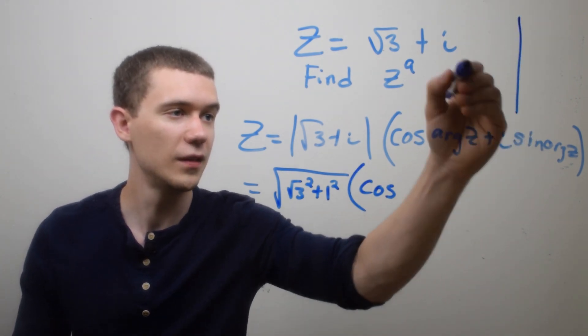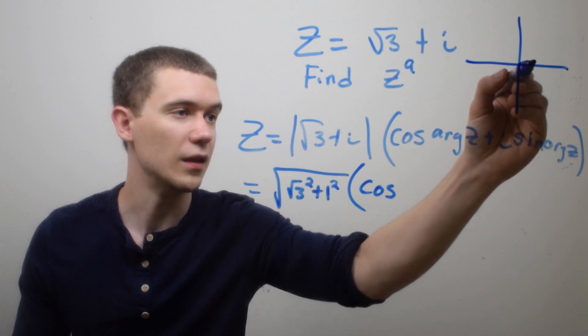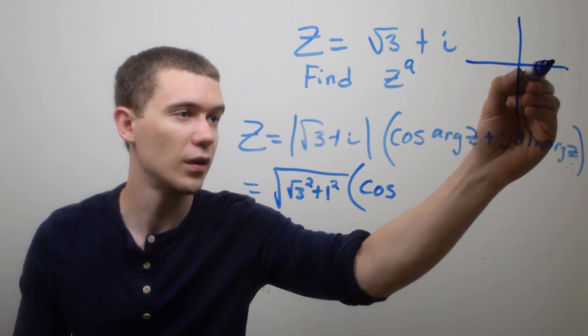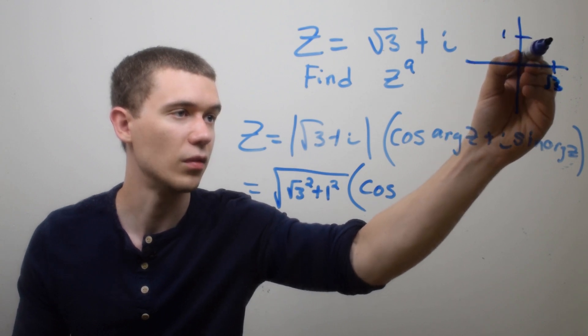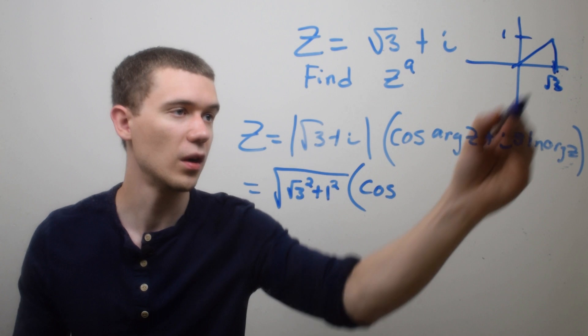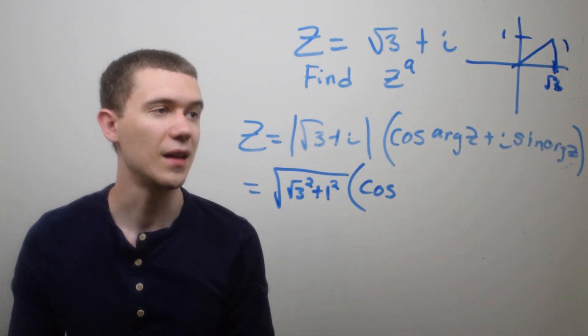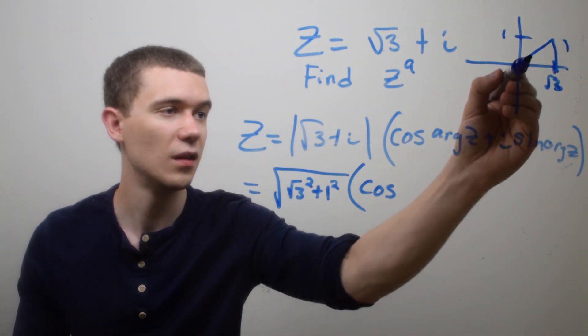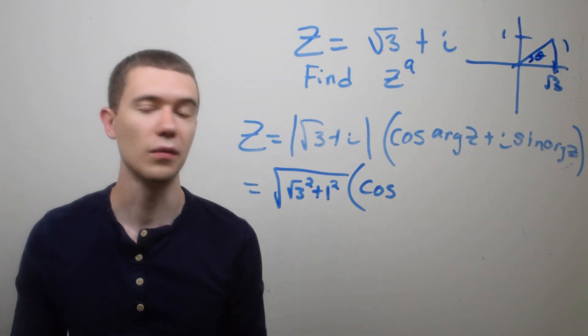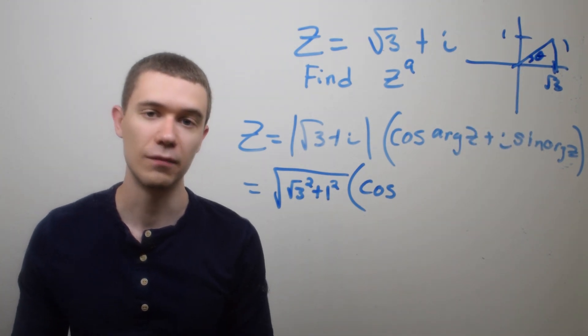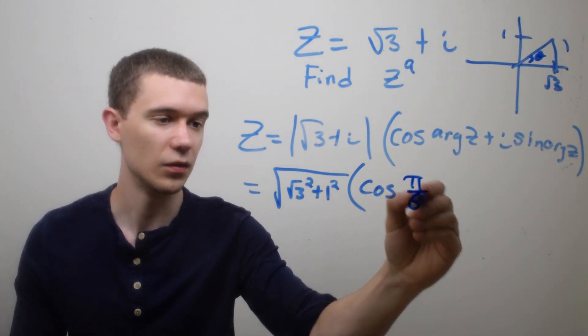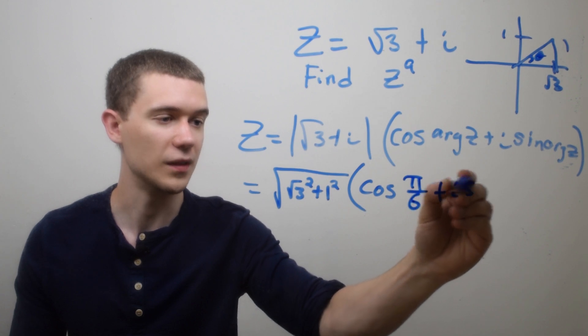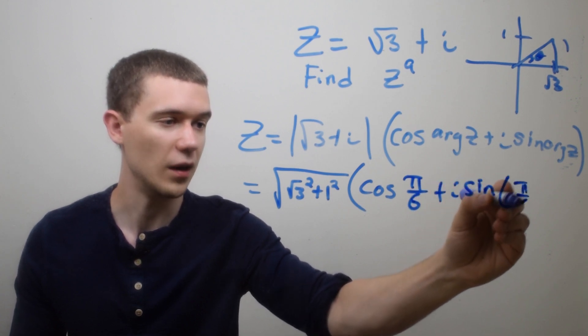If this complex number is √3 in the x direction and one in the y direction, we make this sort of triangle, and I'm taking the inverse tangent of 1/√3 to get θ. The inverse tangent of 1/√3 is π/6. So this is cos(π/6) + i sin(π/6).